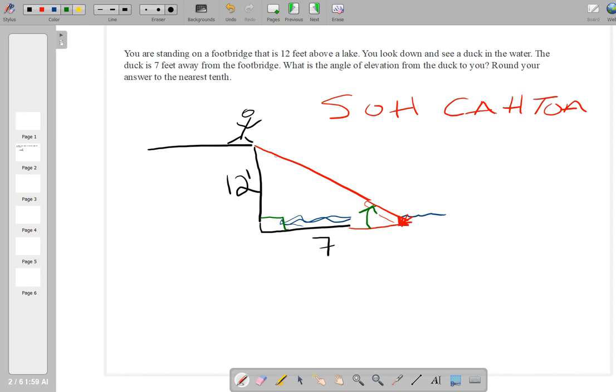If it asked for the angle of depression from you to the duck, that would be this angle here. You are looking down; it is an angle of depression. So it asked for this angle right here. We already know that we have an opposite leg and we have an adjacent leg. We don't need the hypotenuse. We could calculate it with the Pythagorean Theorem, but we're not going to.